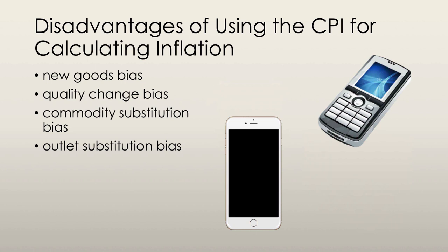We also have the quality change bias, where part of the rise in prices is actually attributed to improved quality rather than inflation. But CPI counts the entire price rise as inflation, so it overestimates the rate of inflation. For example, a new phone has far better quality than an old phone, so of course it's going to be more expensive — but according to the CPI, the change in price is simply due to inflation, which is not correct.